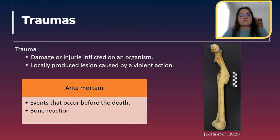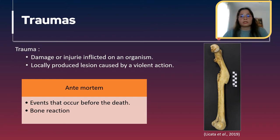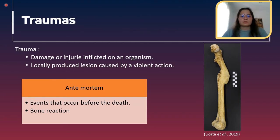Antemortem means that the event occurred before death, and we know this when there are bone reactions. In this image you can see that this zone was fractured, but the bone is back together, meaning there was bone remodeling. This new bone formation allowed the bone to rejoin, and because there was remodeling we know this happened before death.